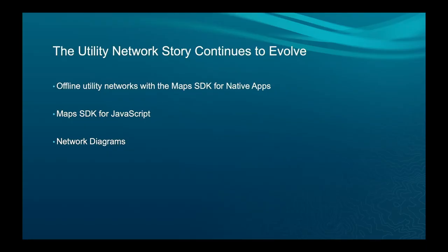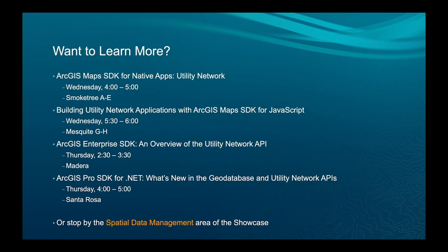To wrap up, the utility network story continues to evolve. The three biggest areas of focus over the next couple of years: offline utility networks with the Maps SDK for native apps — a ton of work is happening there; the Maps SDK for JavaScript, which needs to catch up with more support; and network diagrams outside of Pro. Other sessions this week include Maps SDK for Native Apps tomorrow at 4, JavaScript tomorrow at 5:30, Enterprise SDK overview Thursday at 2:30, and Pro SDK on Thursday focusing on what's new since the last Dev Summit.